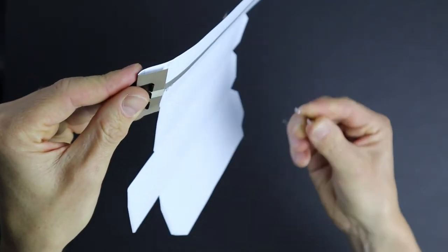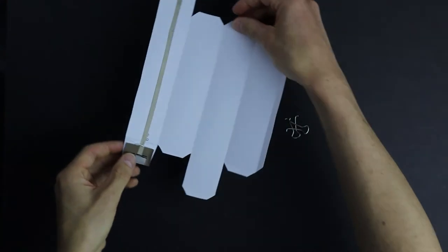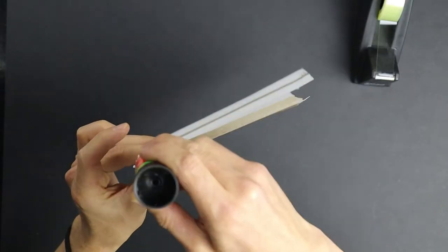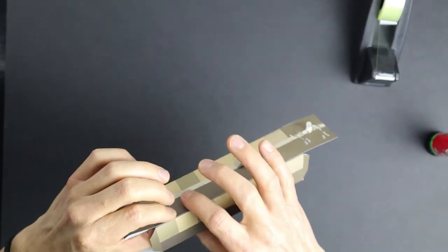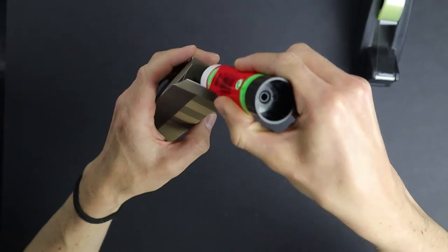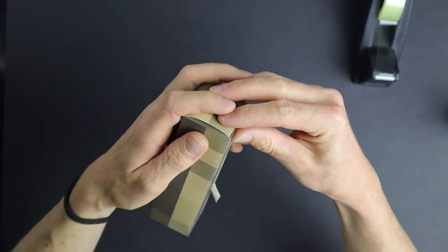Before gluing everything together, remove those parts from the paper clip. Now we can glue everything together. You will see it really helps that we pre-folded everything up front. That way we will get nice and sharp edges.